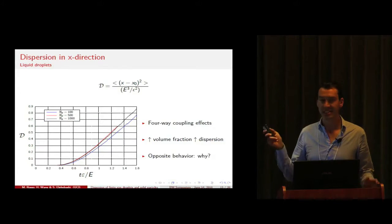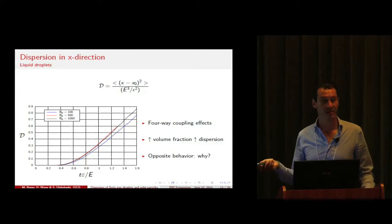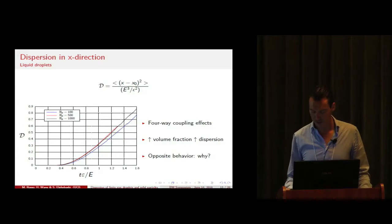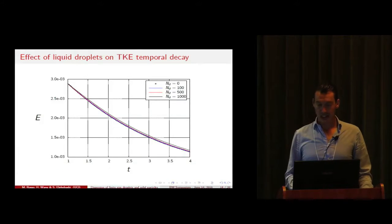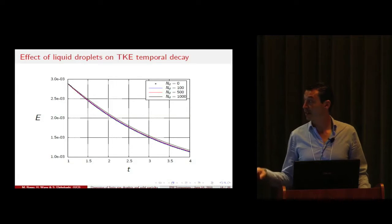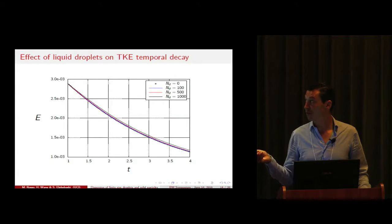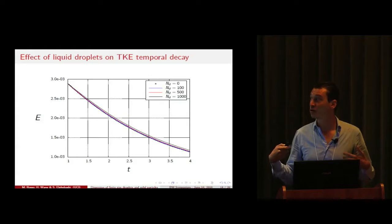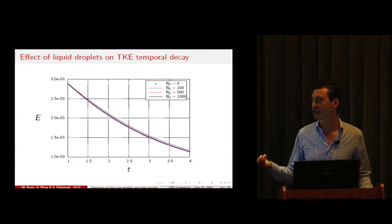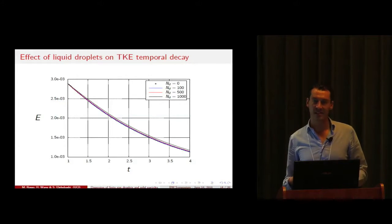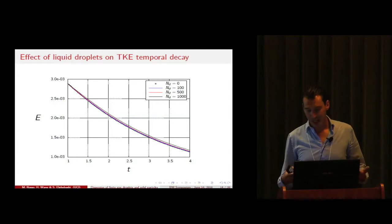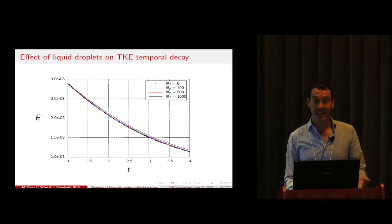First we should realize that in this case we are dealing with four-way coupling effects because the droplets are allowed to deform, unlike the solid particles. We first looked at the TKE temporal decay for an increasing volume fraction of droplets and noticed that TKE decay actually slows down if the volume fraction is increased. This is consistent with the fact that the dispersion increases for increasing volume fraction of droplets, but it doesn't give an explanation.